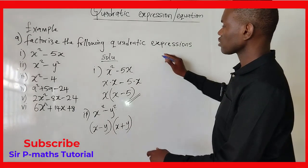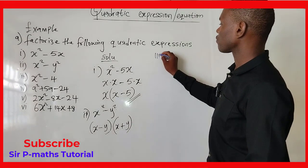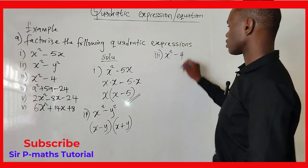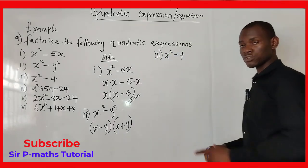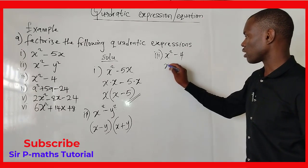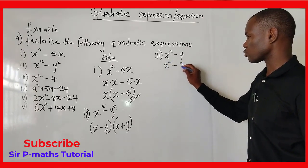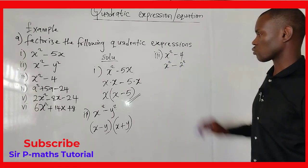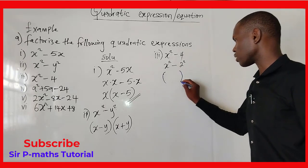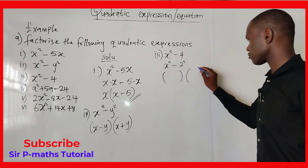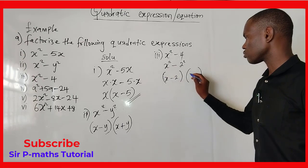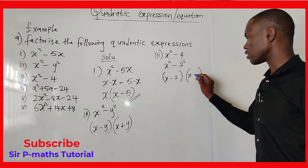The next example is x² minus 4. This is also a difference of two squares problem because 4 can be written as 2². To factorize it, open two brackets and write (x - 2)(x + 2).